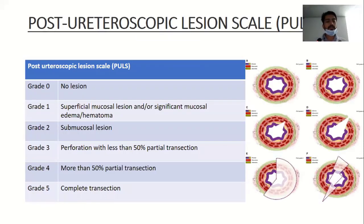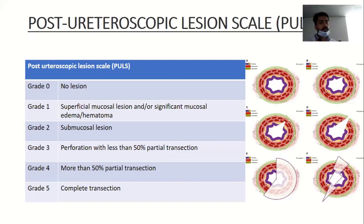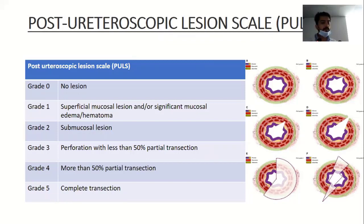There is also another scale for the description of post-ureteroscopic ureteric injuries, known as the post-ureteroscopic lesion scale. It consists of five grades. In grade 0 there is no lesion. In grade 1 there is a superficial mucosal lesion, significant mucosal edema, or hematoma. Grade 2 involves submucosal lesion. Grade 3 causes perforation with less than 50% partial transection. Grade 4 includes more than 50% transection, and grade 5 includes complete transection.